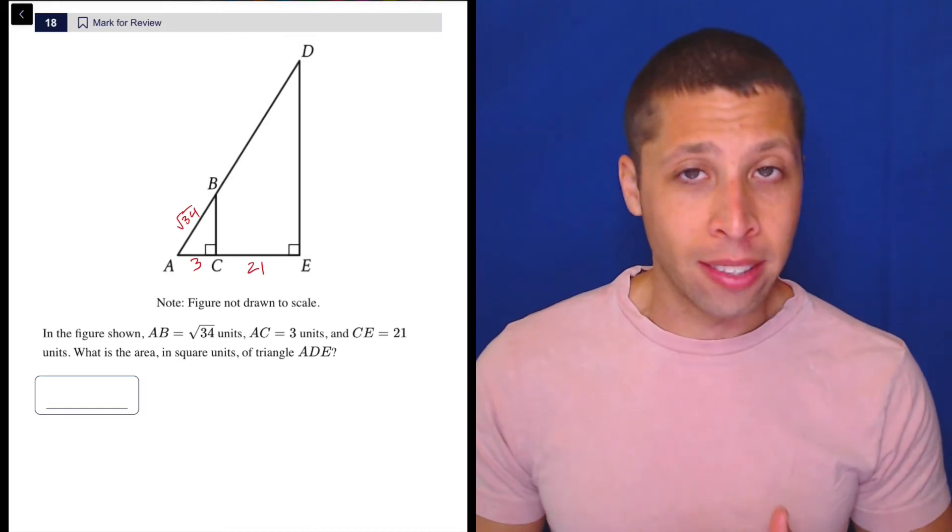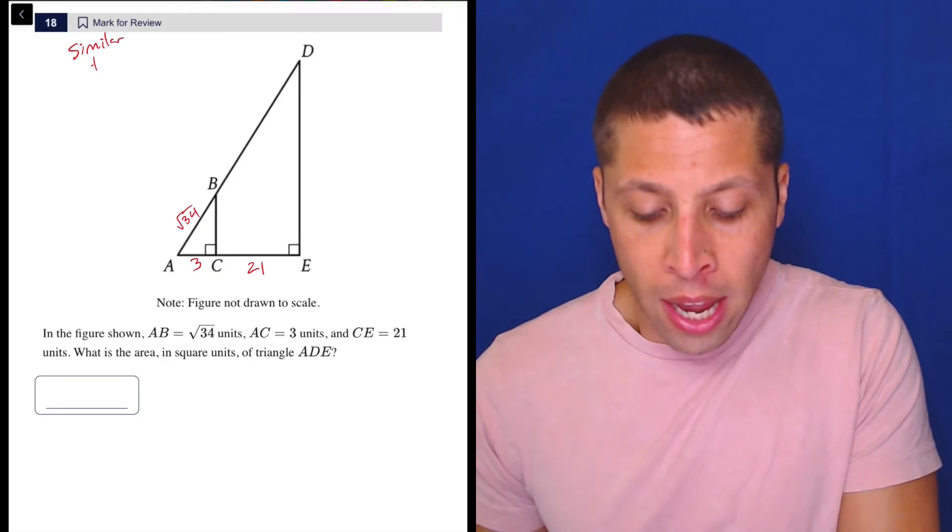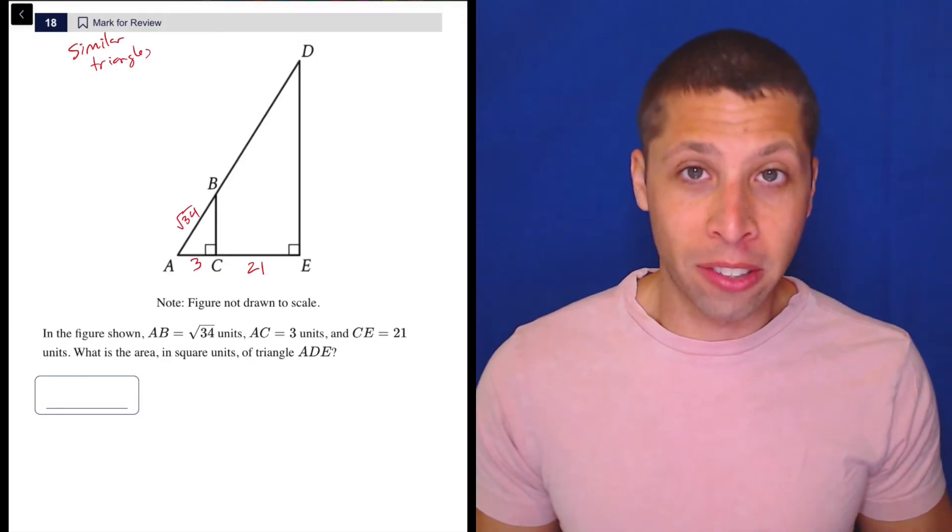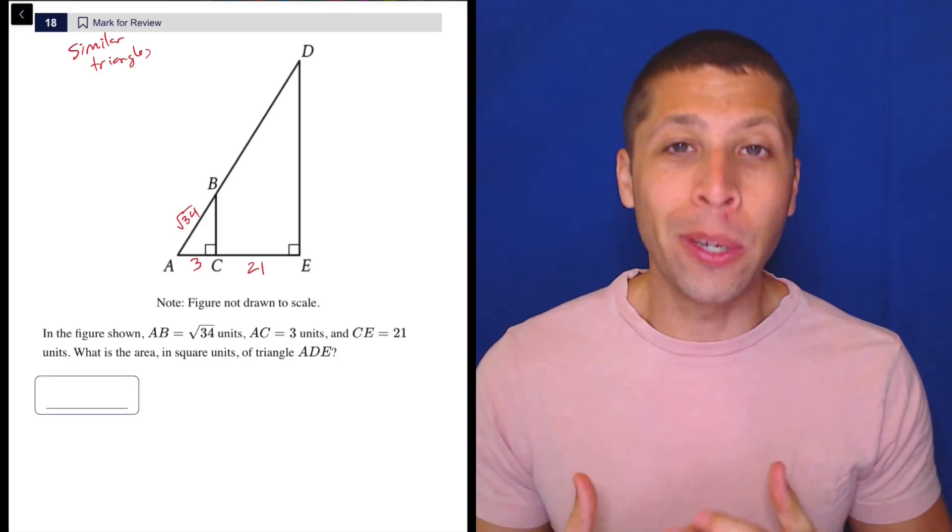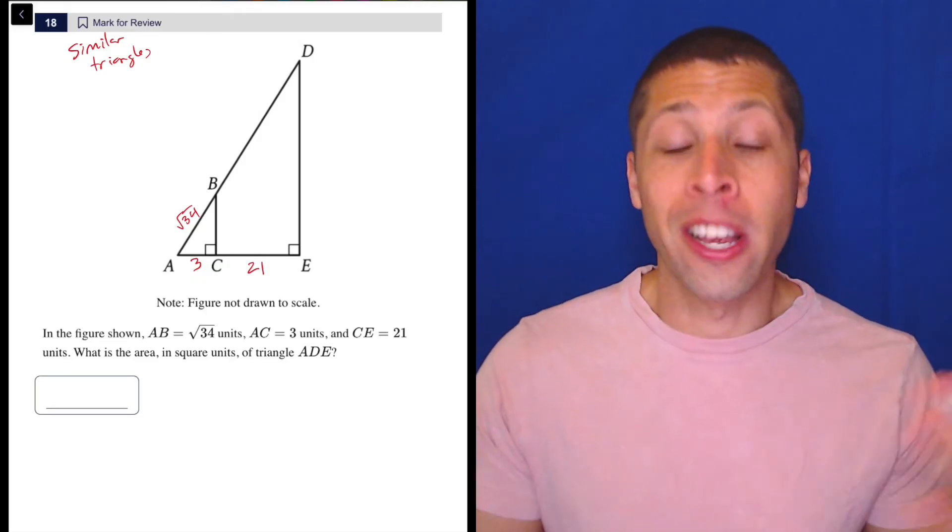So one thing you have to recognize instantly is this question is testing similar triangles. And we could do some proofs to kind of show that they're similar, right? We have two angles that are the same. We have the right angle in each triangle plus angle A is the same. But we don't really need to go through that process. We can just see we've got two triangles. They're going to be in proportion. They're going to be similar.